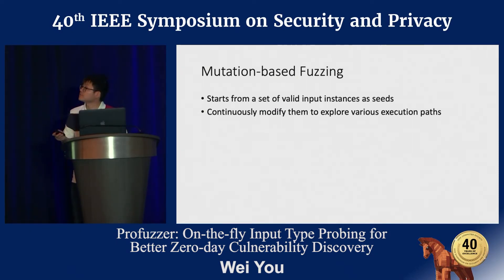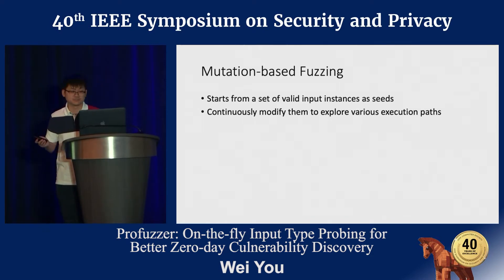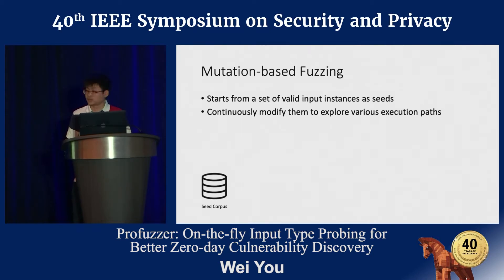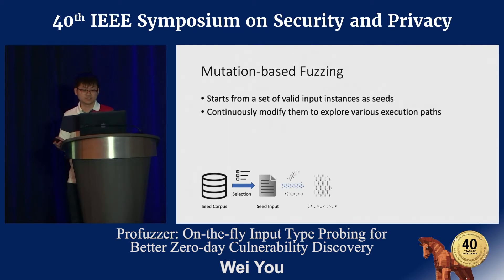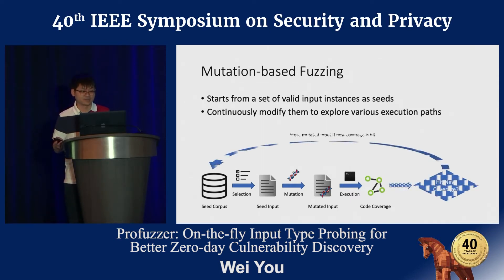Let me give a brief introduction to mutation-based fuzzing. It starts from a set of valid input instances as seed inputs and continuously modifies them to explore various execution paths. In each fuzzing iteration, an input is selected from the seed corpus for random mutations, and the mutated inputs are executed on the target application, and their code coverage is traced.